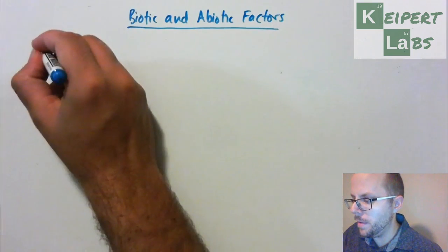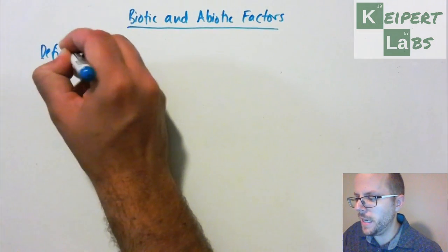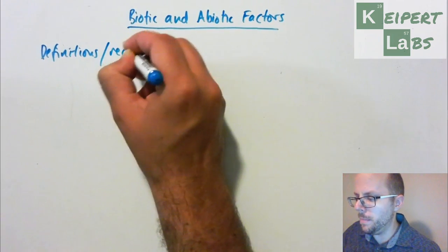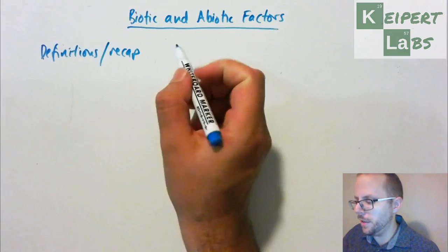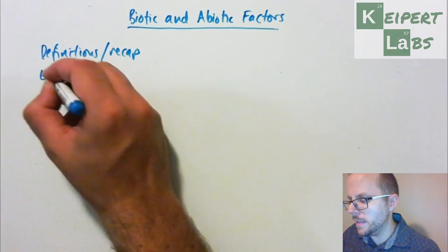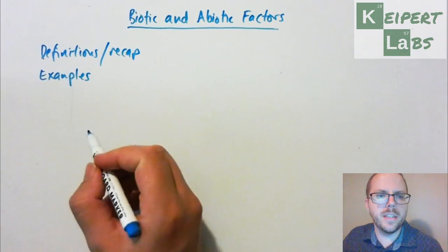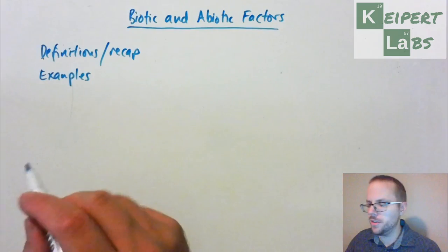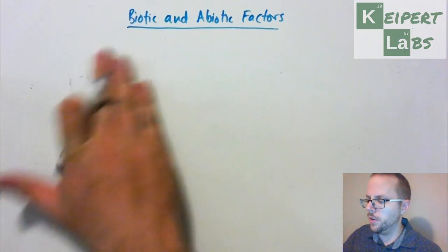In this video we're going to do a bit of a definitions recap about what we mean when we use the labels of biotic and abiotic factors, and then we're going to look at some examples — list out what are some different factors or aspects of an ecosystem that might fall into each category. So let's kick off.